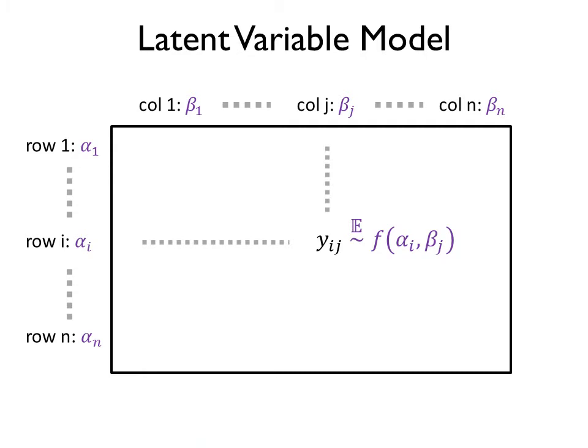All of these applications can be modeled through a latent variable model. We assume that each row is associated with some latent variable alpha and each column is associated with a latent variable beta. A sample data point y_ij is distributed according to some noise model such that its expected value is the function f of the associated latent variables alpha_i and beta_j. The key limitation is that we do not observe the latent variables and we do not assume any parametric form on the function f.